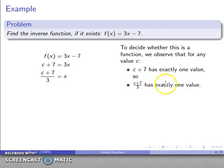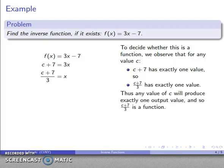And that means that when I divide c plus 7 by 3, there's only one value of c plus 7 divided by 3. So that tells me that any value of c will produce exactly one output value, c plus 7 over 3. And so this is a function.